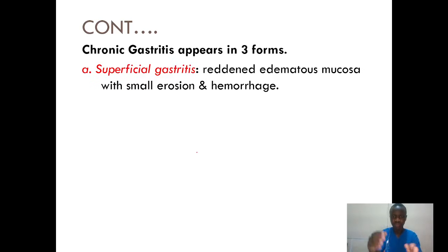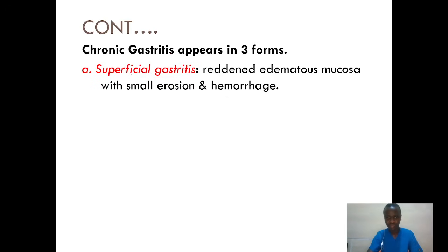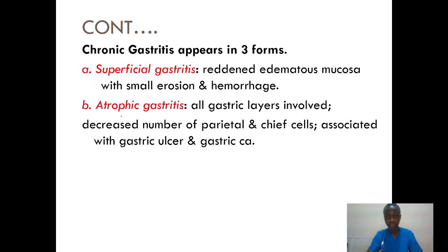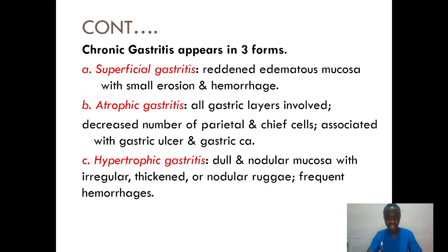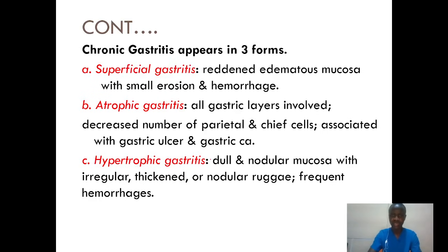Superficial gastritis involves reddening, edematous mucosa with small erosion and hemorrhage. Two, atrophic gastritis. Three, hypertrophic gastritis. We need to know about chronic gastritis and how it appears in these three forms.